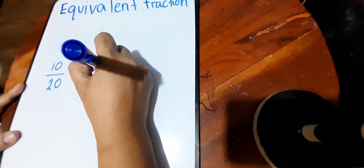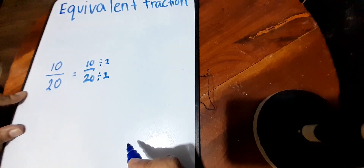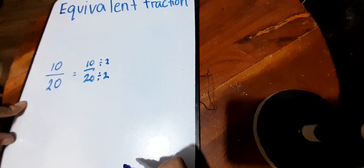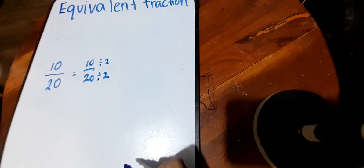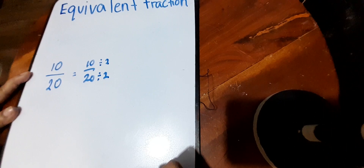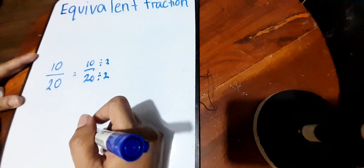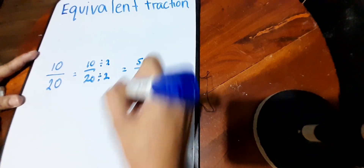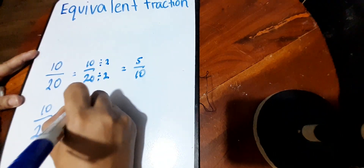We can divide this by two and by two. The number should be divisible by both numbers — the number you divide into ten must also be divisible into twenty. In other words, we get the GCF or their common factor. One of the common factors of ten and twenty is two. So ten divided by two is five, and twenty divided by two is ten. So ten over twenty is also five over ten — that's the equivalent fraction.